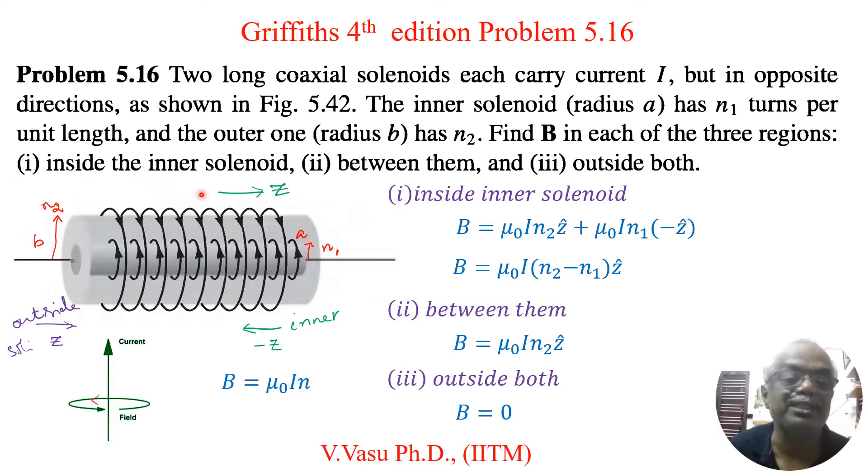What about outside both the solenoids. This outside if you take Amperian loop you are not supposed to include that both the solenoids. So it is outside.